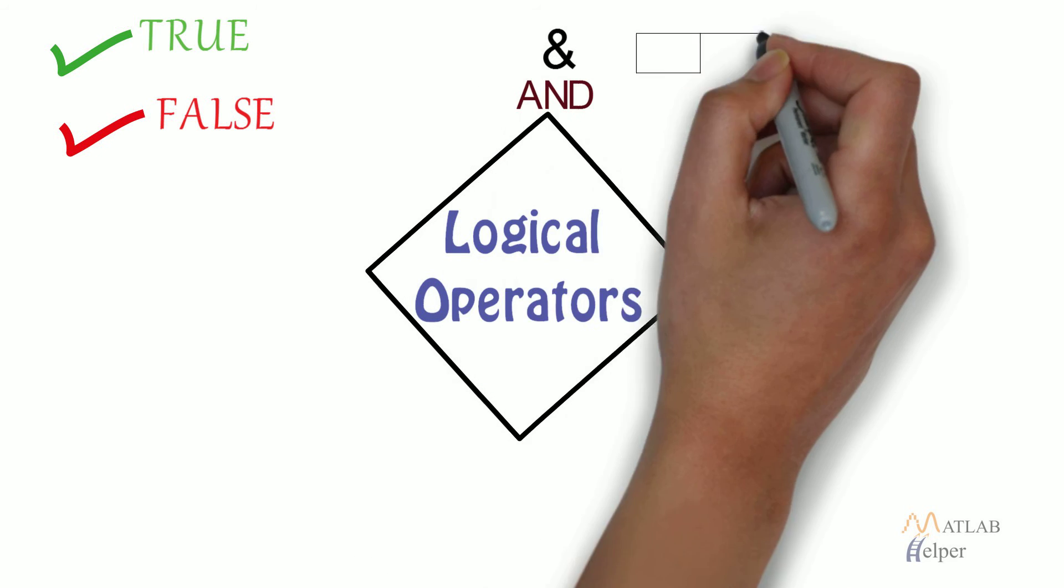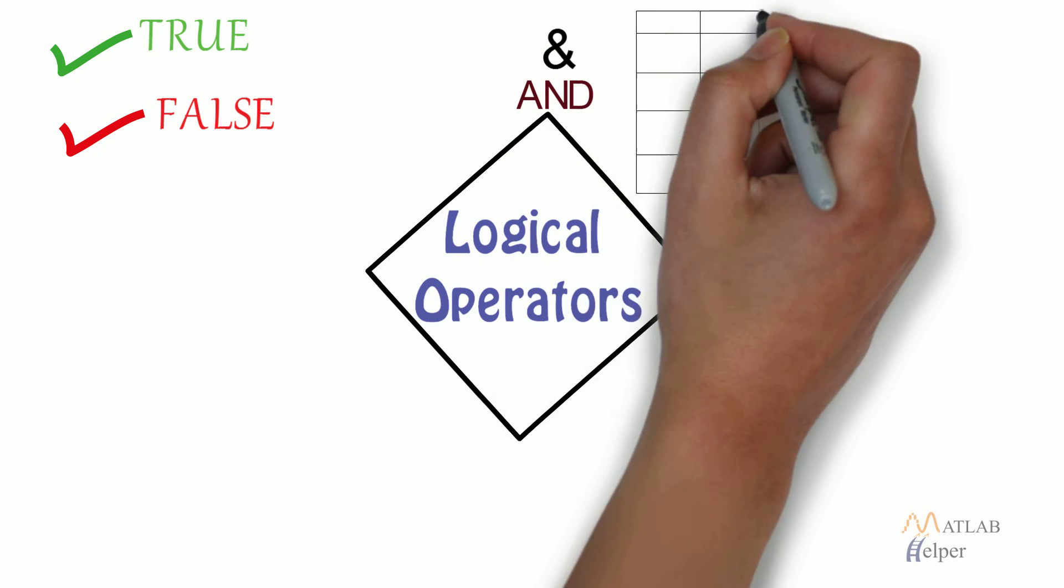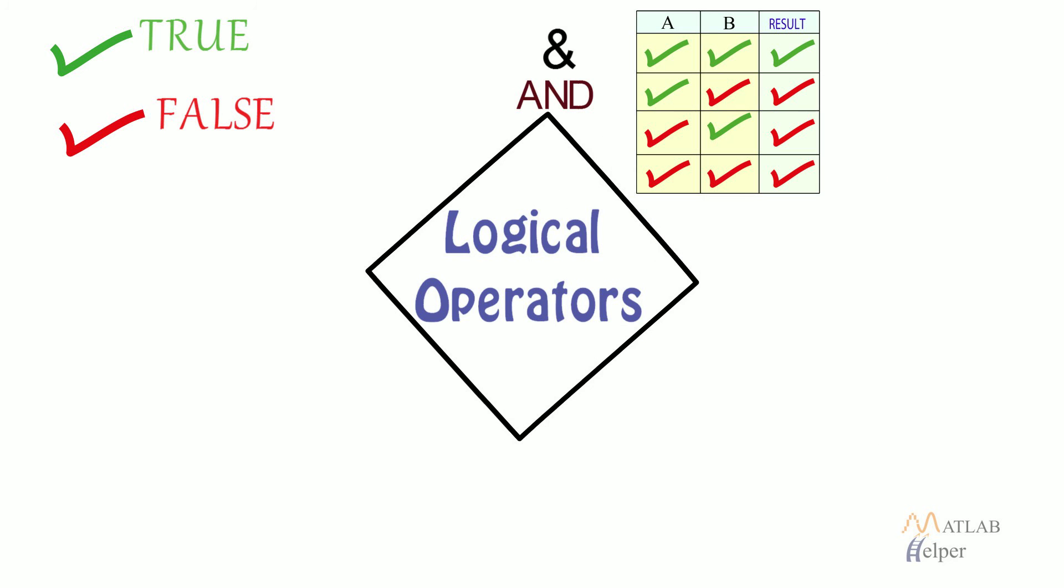Logical and: The result of A and B is true when A and B both are true, else false.